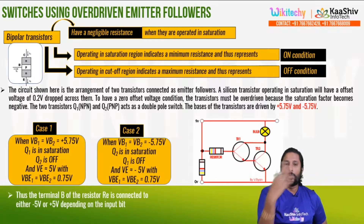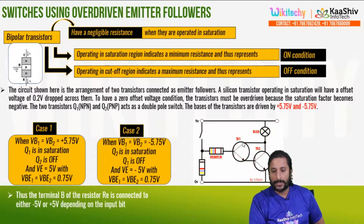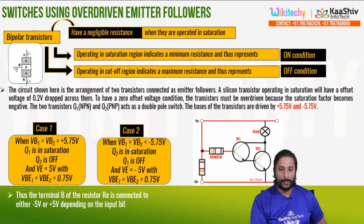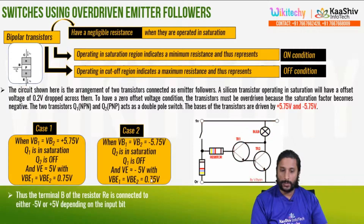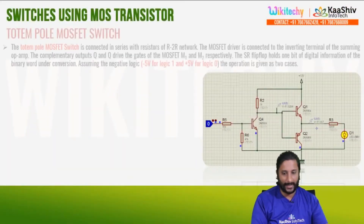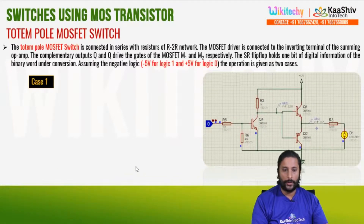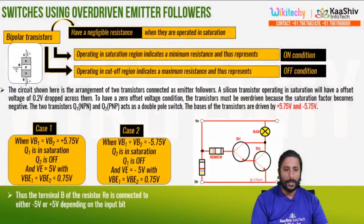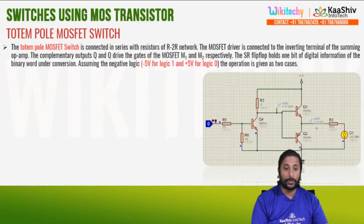For the other condition, Q2 is in saturation and Q1 is off. This is the two-transistor switch: one is saturation, the other is off. V is minus 0.75 voltage. This is the bipolar junction transistor totem pole MOSFET circuit.